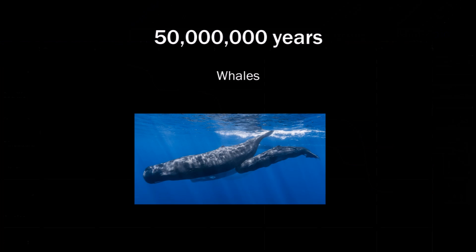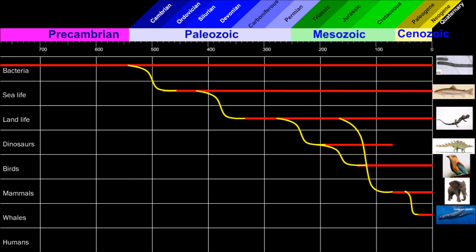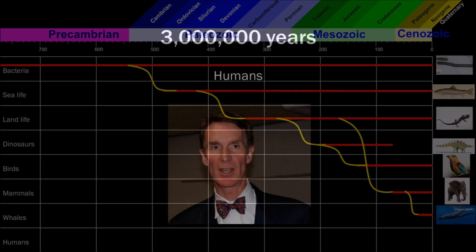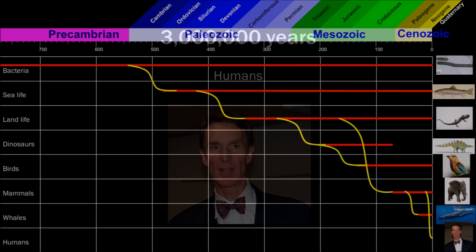Then 50 million years ago the mammals evolved into sea mammals like whales. 3 million years ago, the first humans showed up.